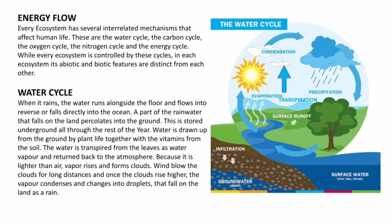Energy Flow: Every ecosystem has several interrelated mechanisms that affect human life. These are the water cycle, carbon cycle, oxygen cycle, nitrogen cycle, and the energy cycle. While every ecosystem is controlled by these cycles, in each ecosystem its abiotic and biotic features are distinct from each other — abiotic meaning non-living things and biotic meaning the living things present in the ecosystem. Among these cycles there will be at least one sure question — explain any one cycle.